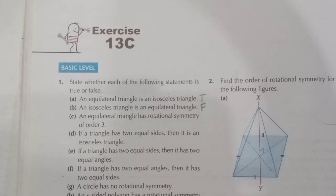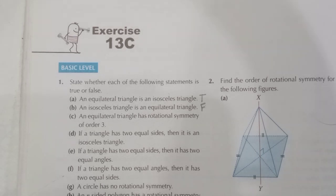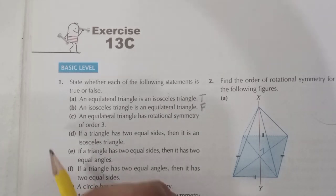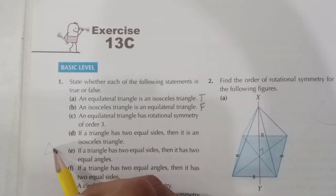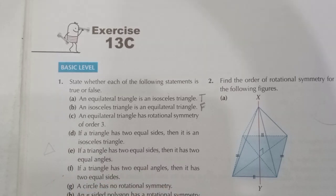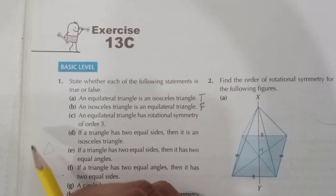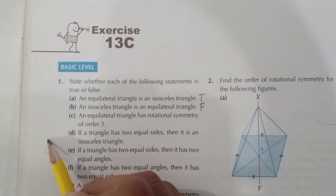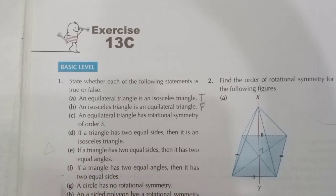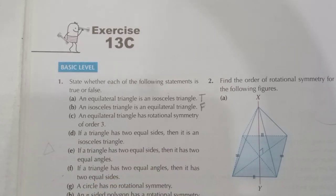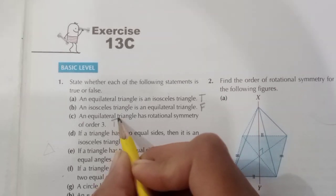C part: an equilateral triangle has a rotational symmetry of order 3. Since the equilateral triangle has three equal sides, it can be rotated and it will look the same. If there are three equal sides, it will map onto itself three times. So this is true.